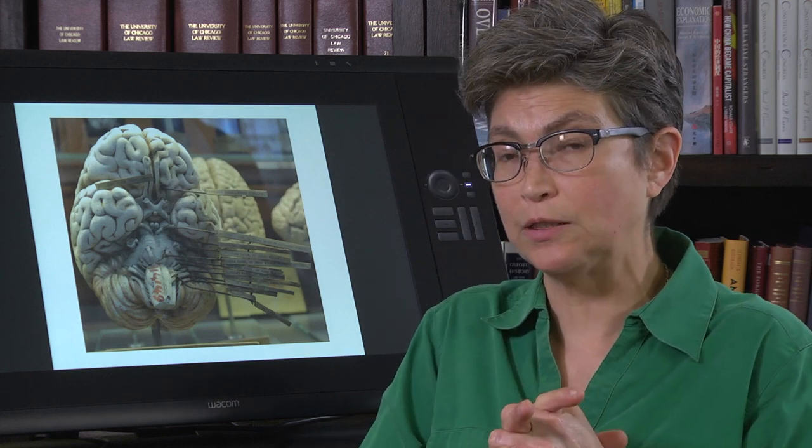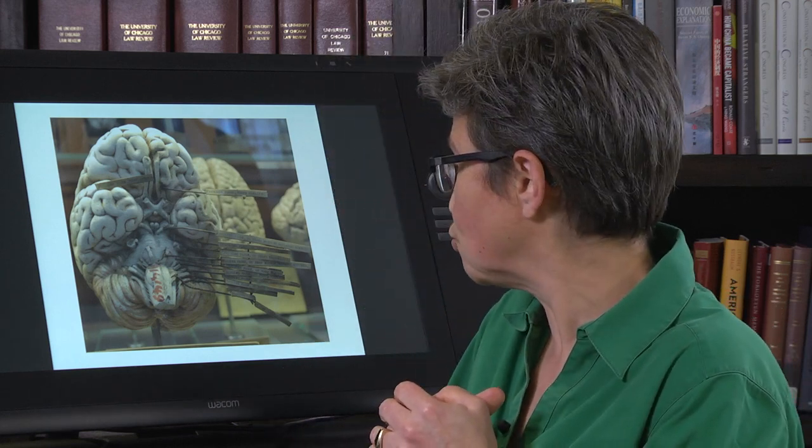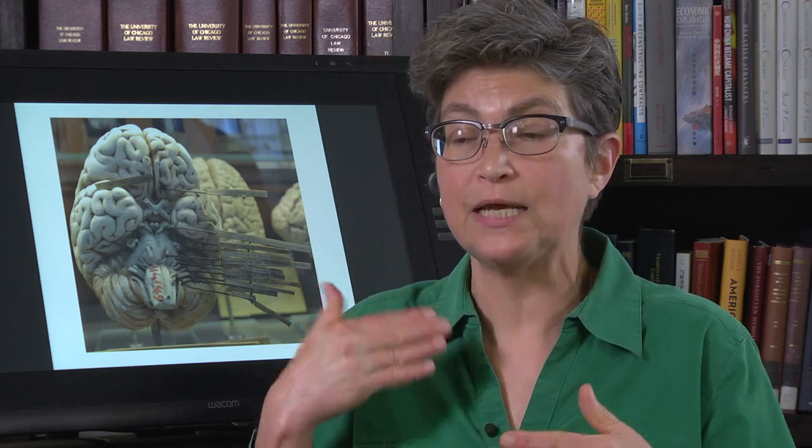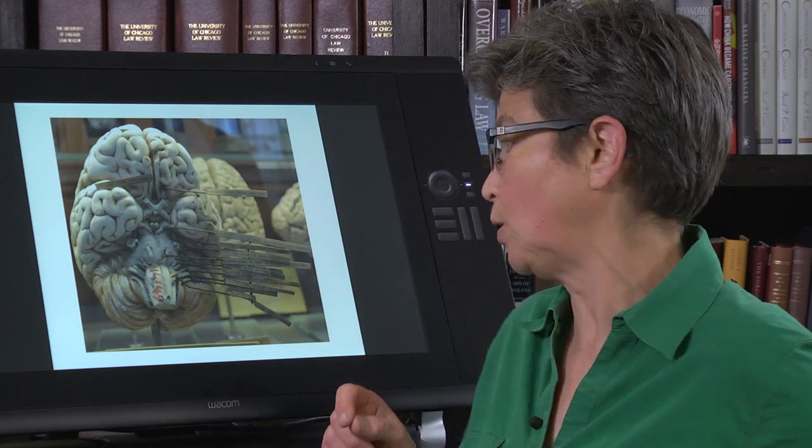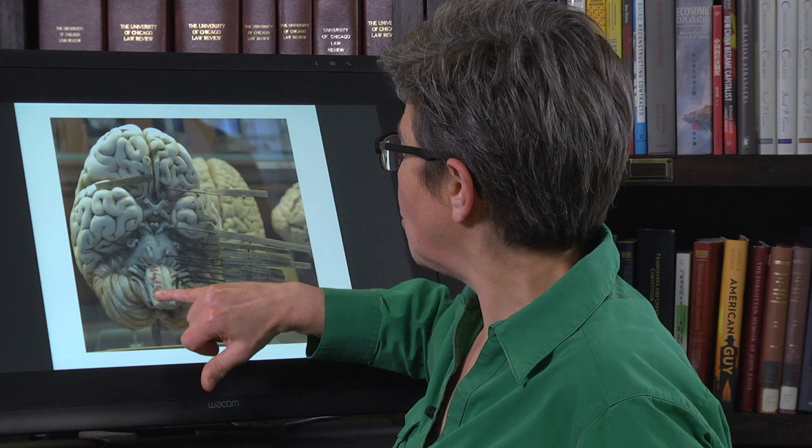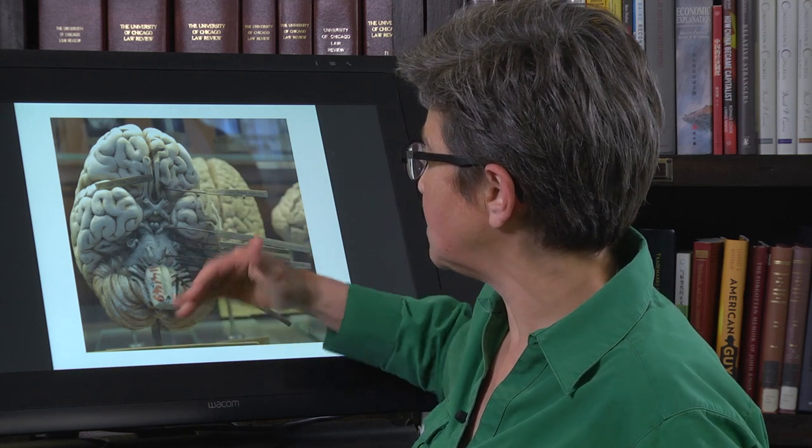CN VIII can get a tumor called a vestibular schwannoma. The myelin of the vestibulocochlear nerve root is provided by Schwann cells, and these can start to divide uncontrollably. It's a benign tumor that won't spread outside the CNS — it just grows. It typically requires surgical removal, which is a relatively successful operation.